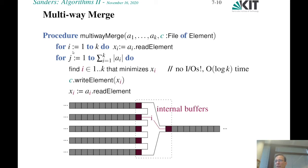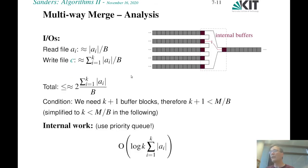We initialize Xi to be the first element of each sequence. In each iteration — and there are as many as the sum of input sizes — we choose the sequence whose current element Xi is smallest, write that element, and read the next element of that sequence. A naive implementation requires O(K) time per iteration. As a small exercise: how can you do that in O(log K) time? For the IO analysis: we read all data and write all data, so the total number of IOs is 2 × (sum of input lengths) / B.